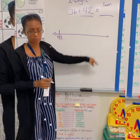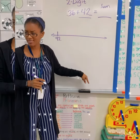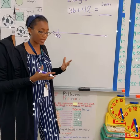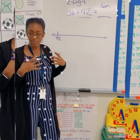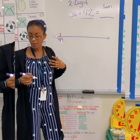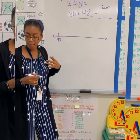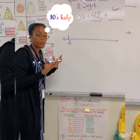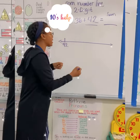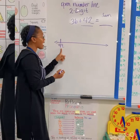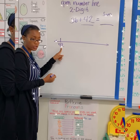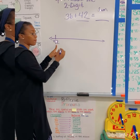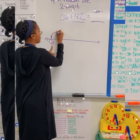But am I just going to jump 36 all at once? Absolutely not! What number do you think it's best I jump by? 10s! I feel more comfortable jumping by 10s. So if I have 42 and I jump by 10, what's my next number? 52!